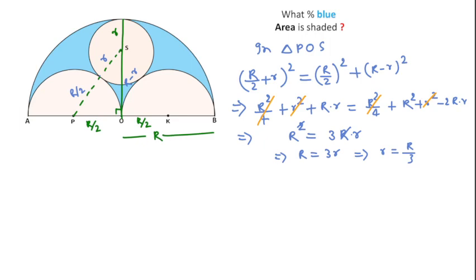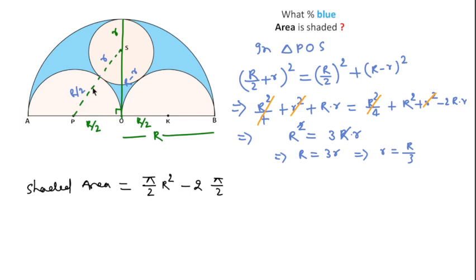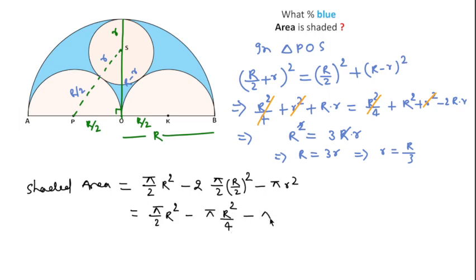Now I will find the shaded area. Shaded area equals the area of the bigger semicircle, which is (Pi/2)R², minus the area of the two smaller semicircles — since they are equal, minus 2 × (Pi/2) × (R/2)², minus the area of the circle, which is Pi × r². Since r = R/3, we substitute to get Pi/2 · R² − Pi·R²/4 − Pi·R²/9.